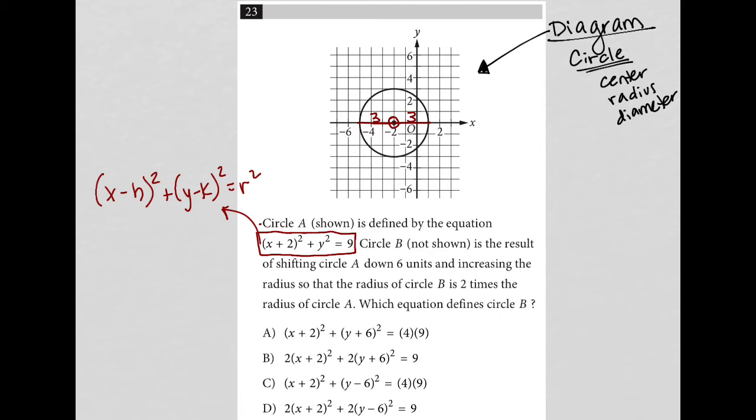So that's why I knew that the center, which is h comma k, I would know that that was negative 2, 0. And again, the radius, which is just the r portion of that, must be 3 because if r squared is 9, then r is 3.